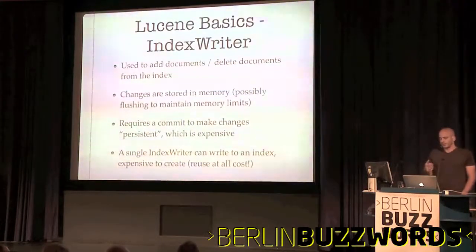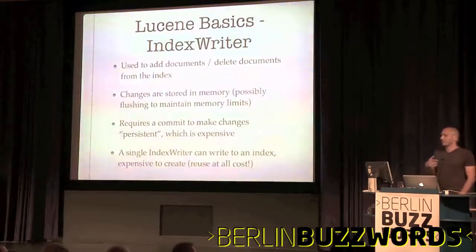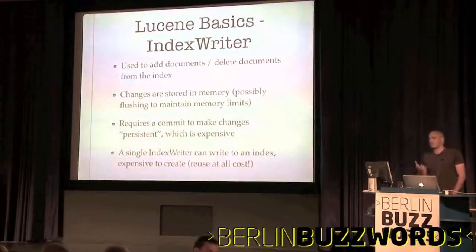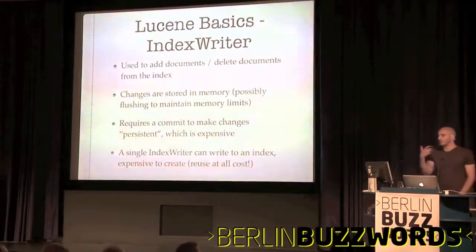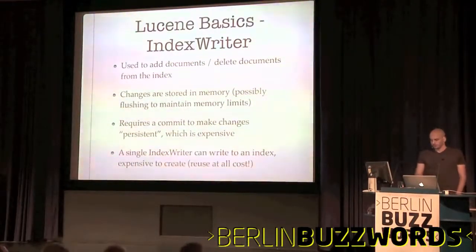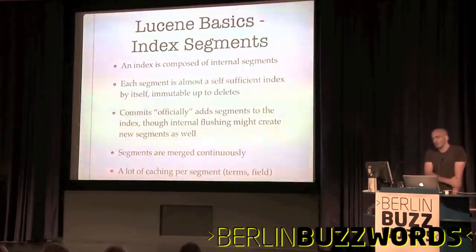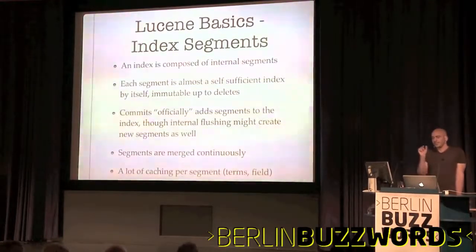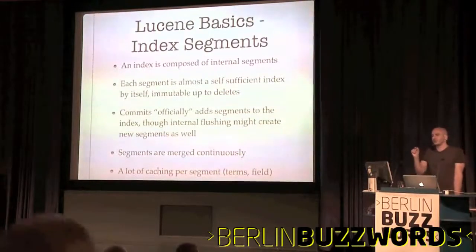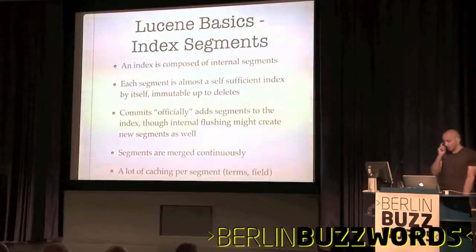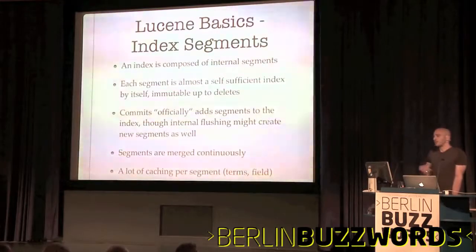Another important notion is that you can only have one index writer indexing against an index. An index writer is an expensive thing to create, so you want to reuse it as much as possible. Each index is composed of many small segments. Each segment by itself is almost self-sufficient in a Lucene index. They are immutable, up to deletes — once a segment is written, it's not going to change.